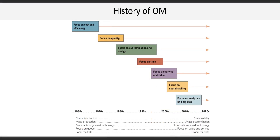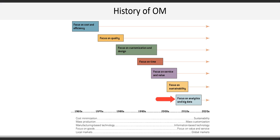Next, we learn about some of the interesting history of operations management, where since the 1960s, nearly each decade saw an advancement or shift in operational emphasis. Over the past 60 years, we've seen the emphasis move from cost and efficiency through to quality, and now to sustainability and analytics and big data.